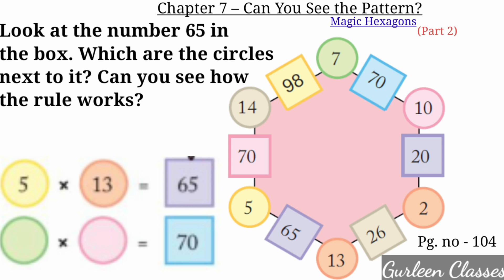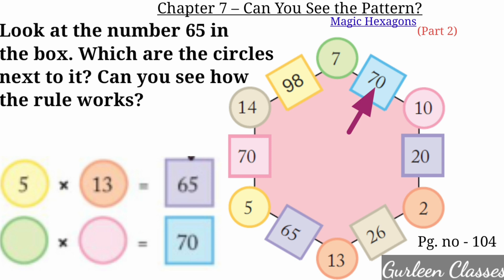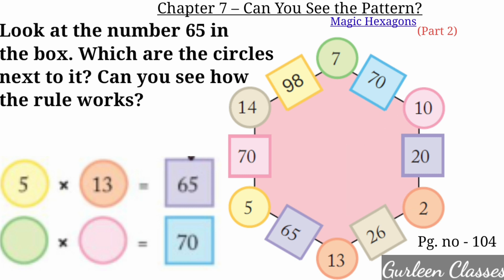Now let us verify the example. In box 65, the circles next to it are 13 and 5, and 13 times 5 is 65. In box 70, we have 5 times 14 equals 70. Box 98: 14 times 7 equals 98. Box 70: 7 times 10 equals 70. Box 20: 10 times 2 equals 20. Box 26: 2 times 13 equals 26.